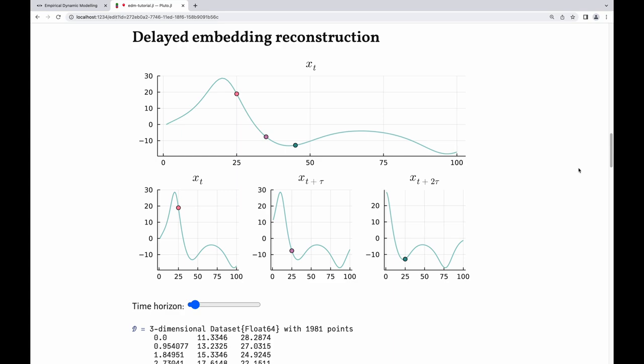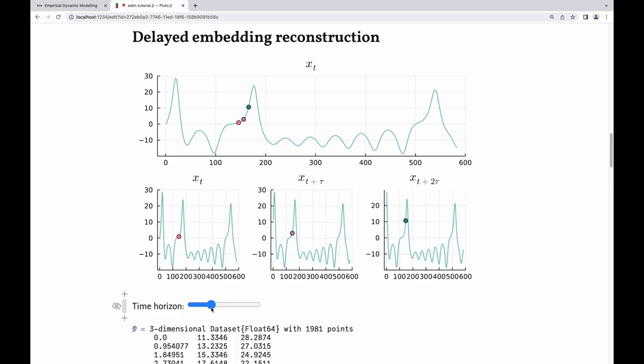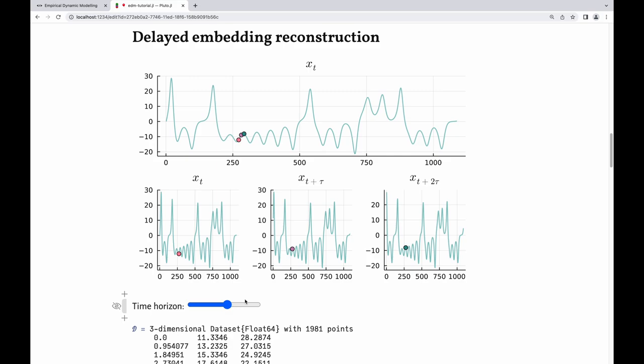Now, what the main part of Takens' theorem is to take, imagine we only see the X's here. We've got X, Y, and Z as the whole system, but we only observe one of them. We want to reconstruct the whole system just from that one time series. So here I've got just X, and I view it at times 25, 35, and 45. And I generate three new time series from that, sort of recycling the one time series into three time series. And as I move along the time, it's kind of like moving a comb along the time series of the original one to generate three new time series.